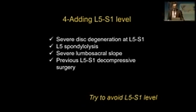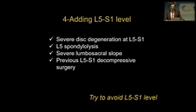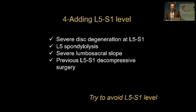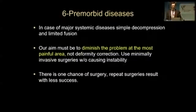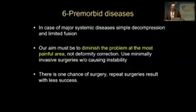We must try to avoid the L5-S1 level. However, if there is severe degenerative disc at L5-S1, spondylosis at L5, severe lumbosacral slope, or previous decompressive surgery, we must add the L5-S1 level. Sometimes we can also add an iliac screw to strengthen the level. Premorbid diseases are also very important in our decision making. Our aim must be to diminish the problem at the most painful area, not necessarily to correct the entire deformity.